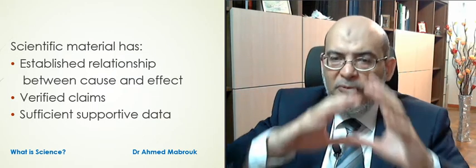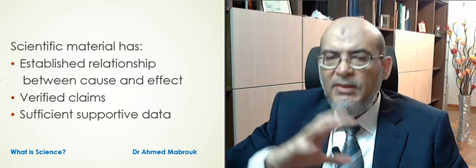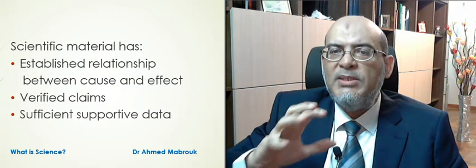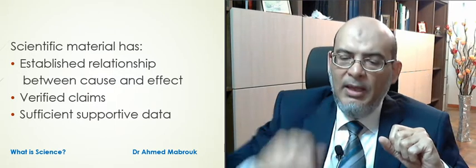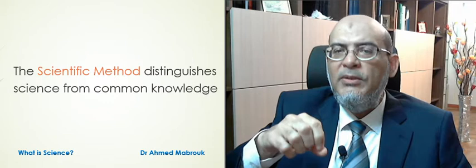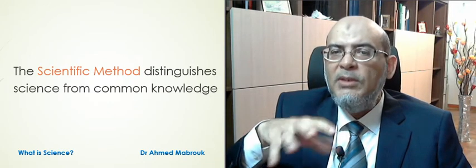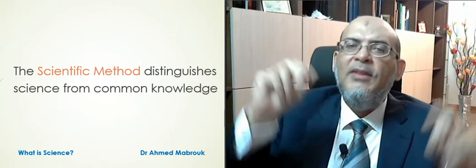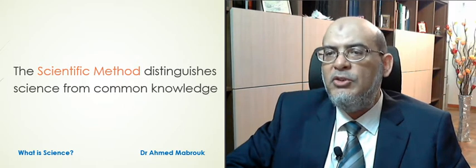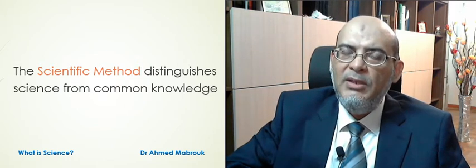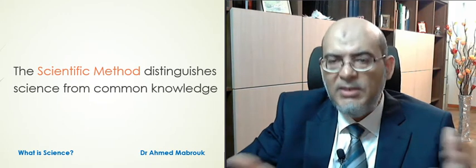So this one is particularly important: you would get verified claims supported by sufficient amount of supportive data. If we look at these factors all together in a holistic view, you will see that these factors form our perception about science. These factors taken together constitute what we call the scientific method. This scientific method distinguishes between science and common knowledge. Whenever it is satisfied, we get science. When it is not fulfilled, we don't get science — it is just common knowledge.